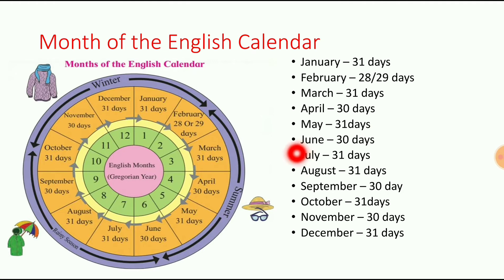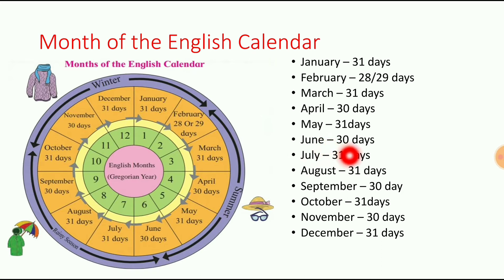The sixth month is June. June is the sixth month. J-U-N-E, June. How many days in June? 30 days.